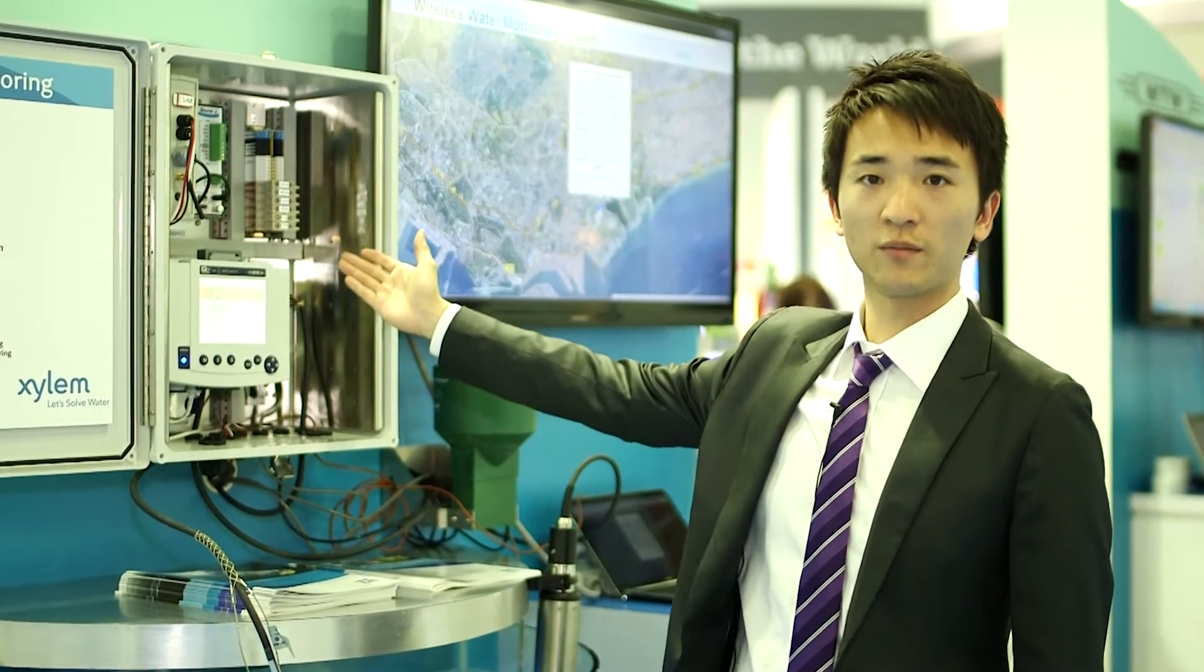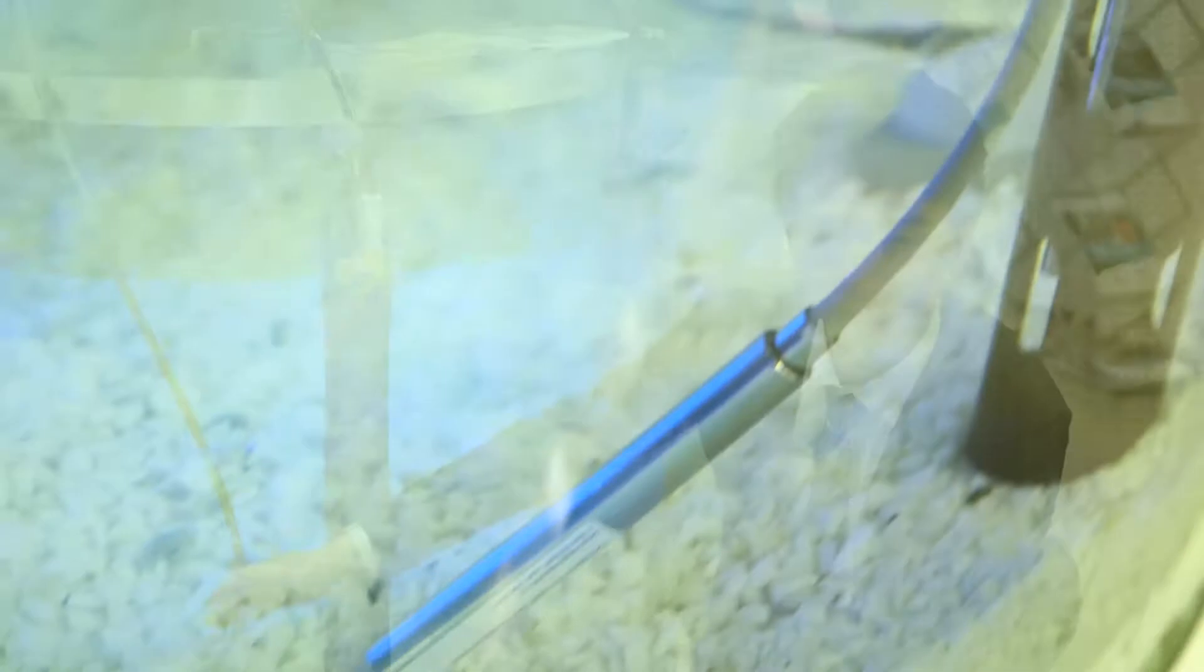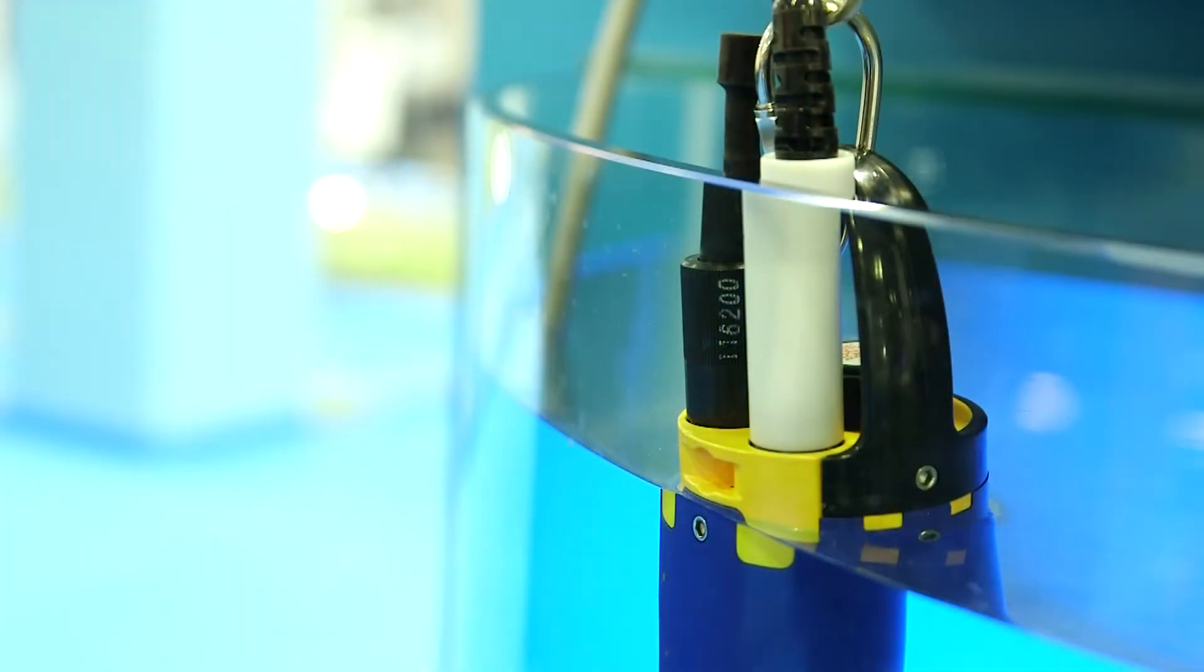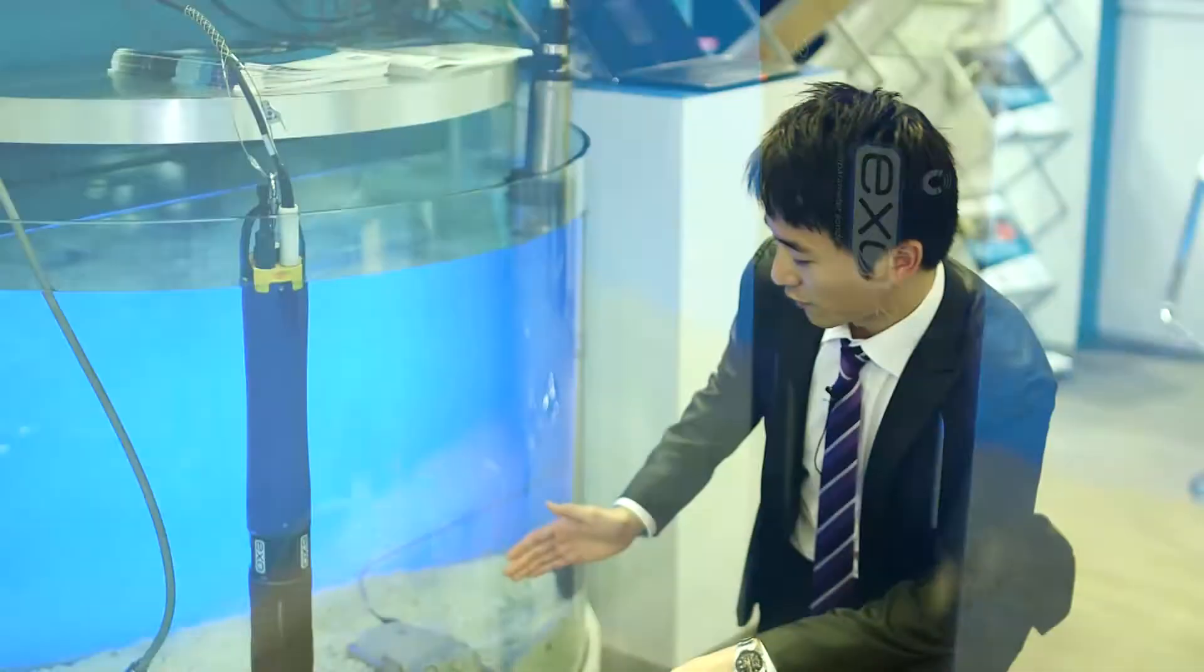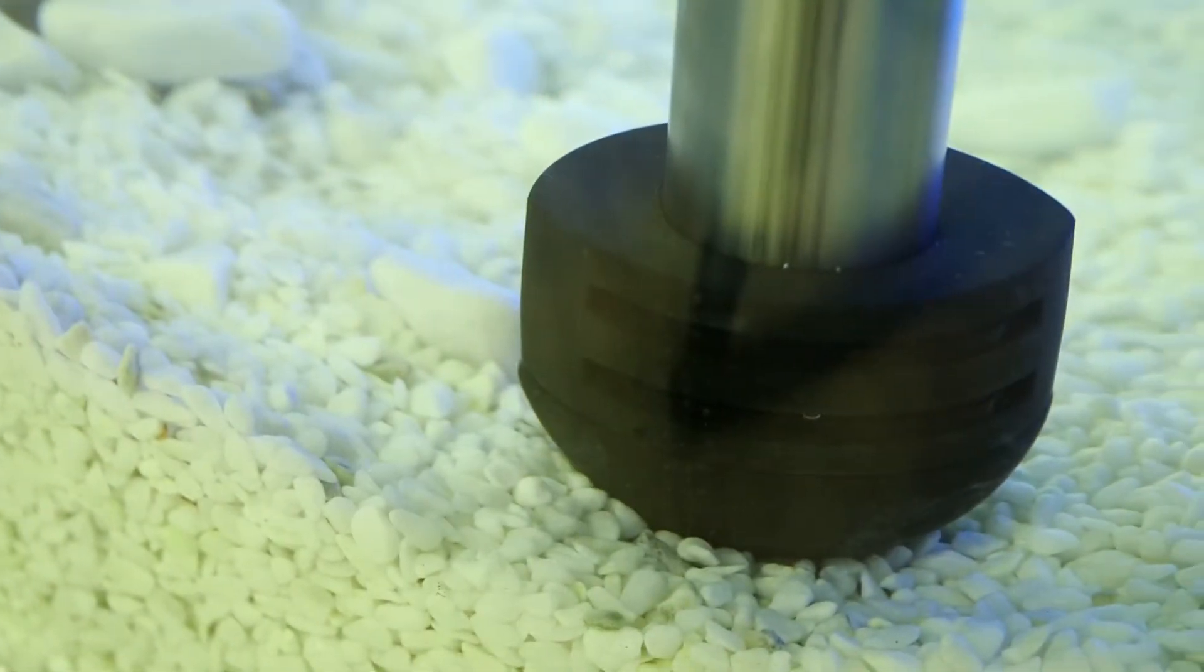So here we have a water quality monitoring station, and here as you can see we have a water level sensor, a multi-parameter instrument, and we have a water flow, water velocity sensor, and then here we have a COD sensor.